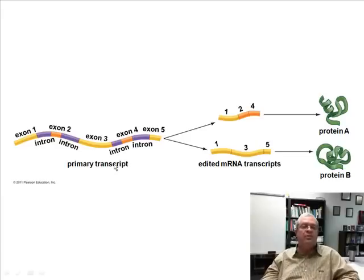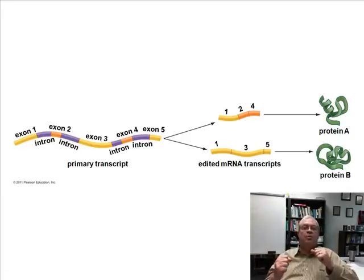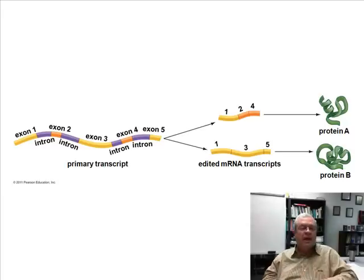We have here the primary transcript, that's the original RNA molecule produced by transcription and it has exons and introns and of course the introns are cut out, but what do enzymes do with the exons? They combine them in different combinations. Here's exon 1, 2 and 4 combined to form an RNA molecule, a messenger RNA molecule. Here's exons 1, 3 and 5 combined to form a totally different or a very different messenger RNA molecule.